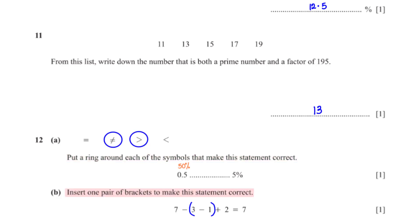Insert one pair of brackets to make this statement correct. When we put the brackets around 3 minus 1, we are able to make the given statement true. 3 minus 1 is 2, so 7 minus 2 plus 2 is 7.